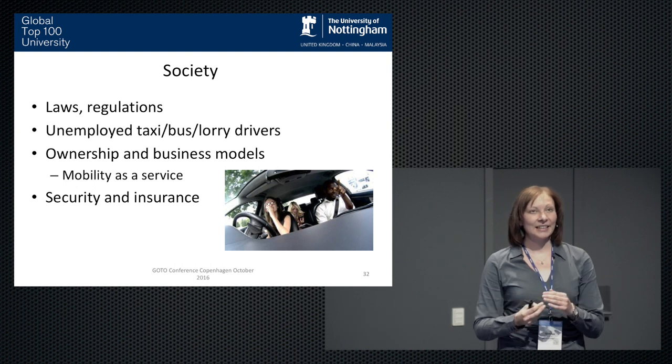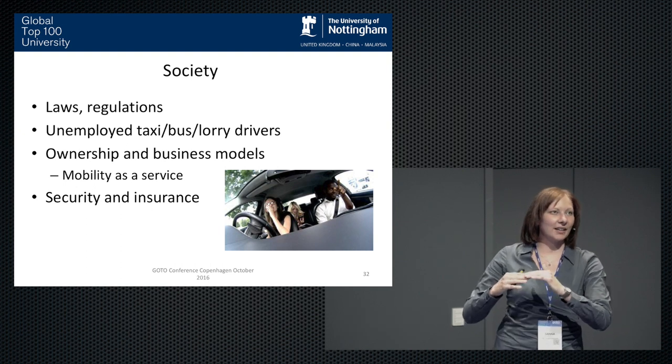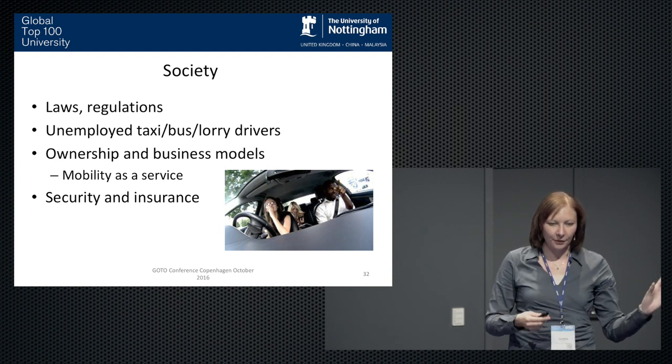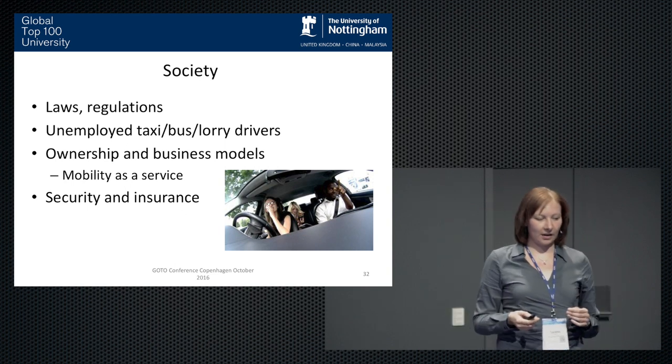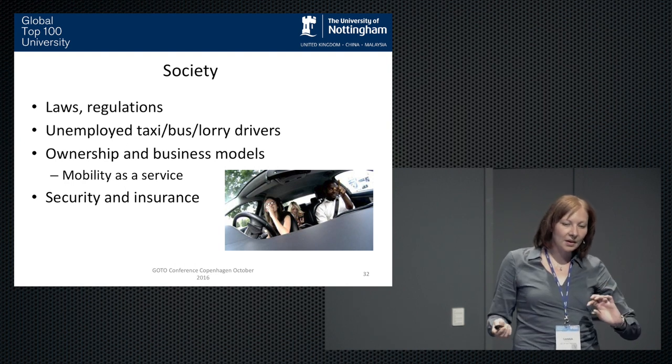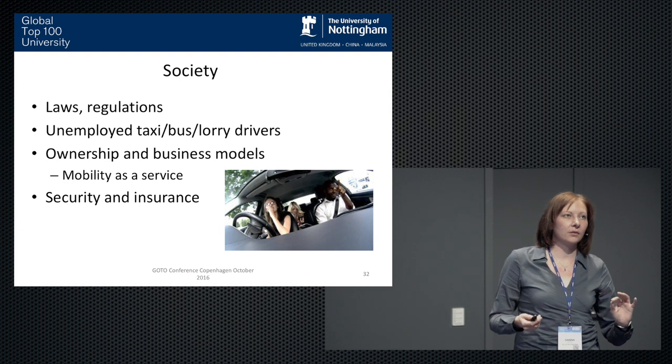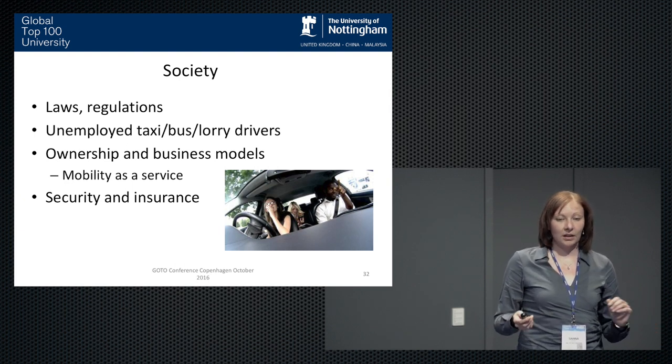A few words about the society. A big hurdle still for autonomous vehicles are the laws and regulations. There's still so much to solve, especially more in some countries and less in others. But that's still considered one of the big problems to overcome. We don't know yet what the effects will be on unemployment because there is a lot of potential for employment. But in the UK, for example, there are about 700,000 professional drivers and how their lives would look like in a few years' time. I don't know. I hope not too bad.